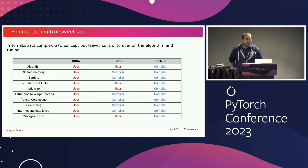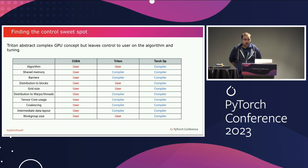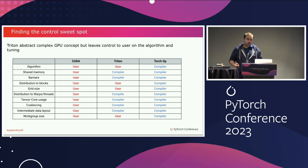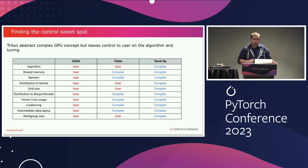Triton is in between CUDA and Torch in that you still get to write your algorithm, control your types, and decide precision for intermediate values. But you don't have to care about how to handle shared memory, how to use tensor cores, or how to handle load coalescing for good memory access patterns — things that people constantly worry about when writing GPU kernels. The compiler will do that for you.